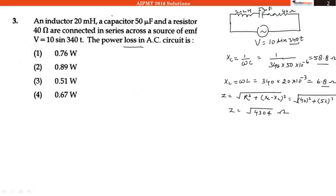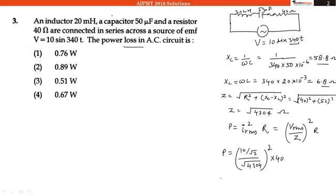Now, according to question, we will have to find the power loss by the circuit. I RMS square into R, that is I RMS can be written as V RMS divided by Z whole square multiplied by R. And after putting the values, V RMS is 10 by root 2 and Z is root of 4304, that is whole square into 40. And after solving, the power dissipated will be 0.47 Watt.